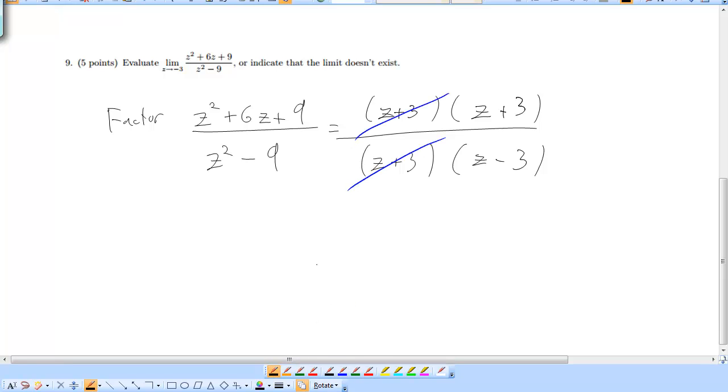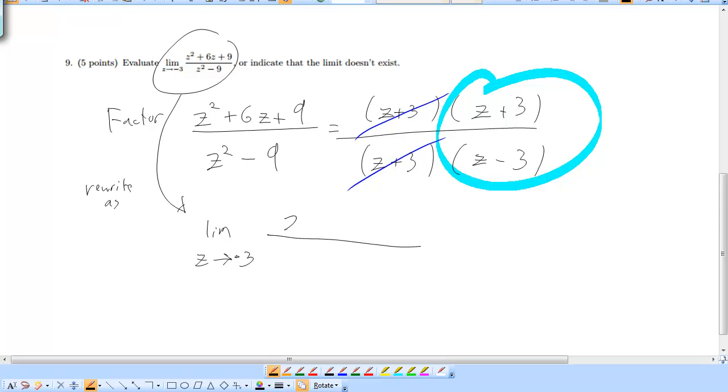And the reason why it's legal to do this is because z isn't actually negative 3. It's just really, really close to negative 3. So we're not dividing 0 by 0 here. We're just dividing a tiny number by a tiny number. So that's why it's legal to do this. So we can rewrite this, once we cancel those things out, as the limit as z approaches negative 3 of z plus 3 over z minus 3. Now, if you notice, if I substitute negative 3 in for this function, I no longer have a 0 in my denominator.